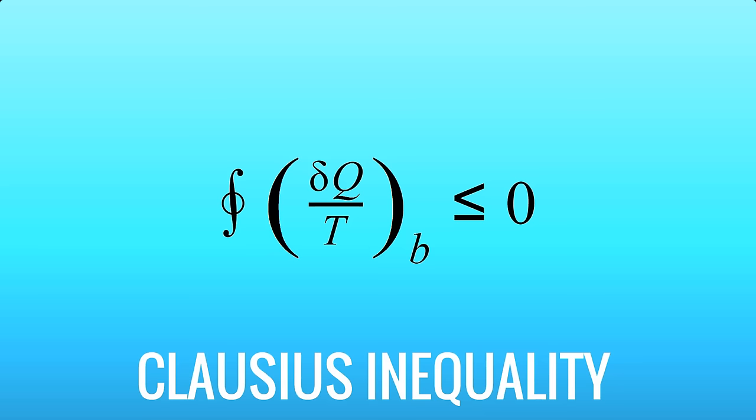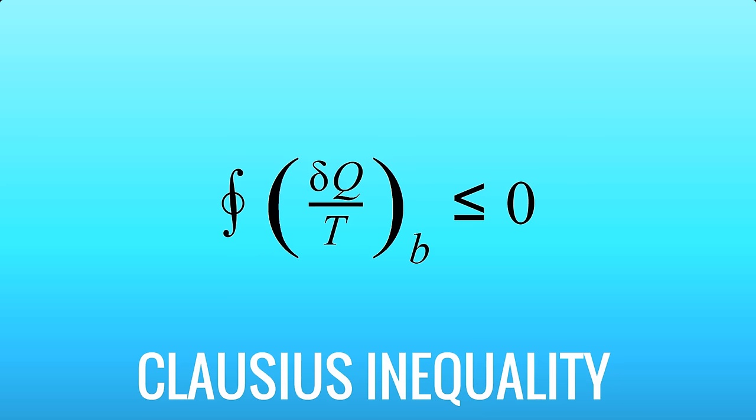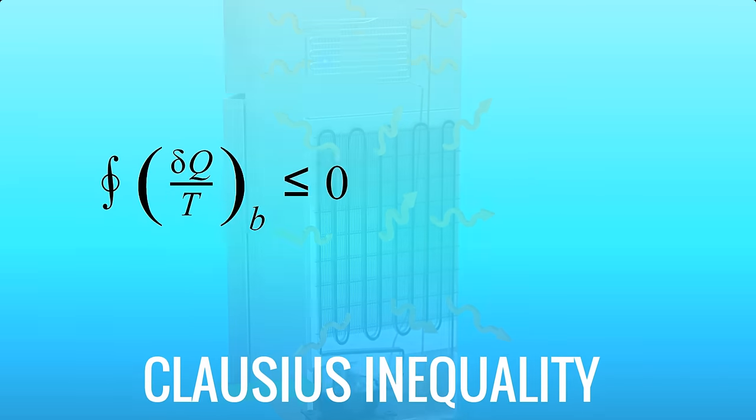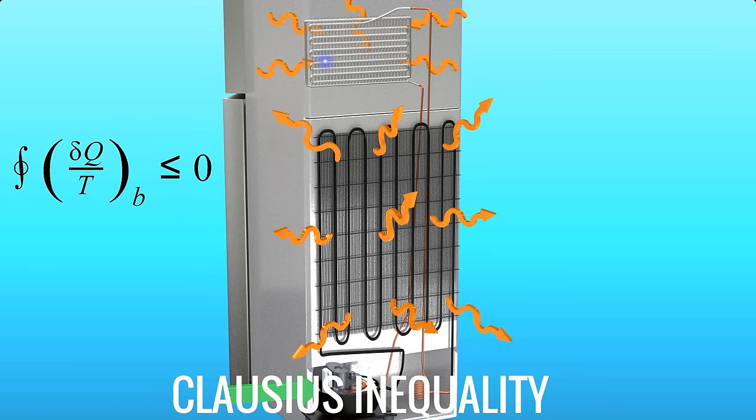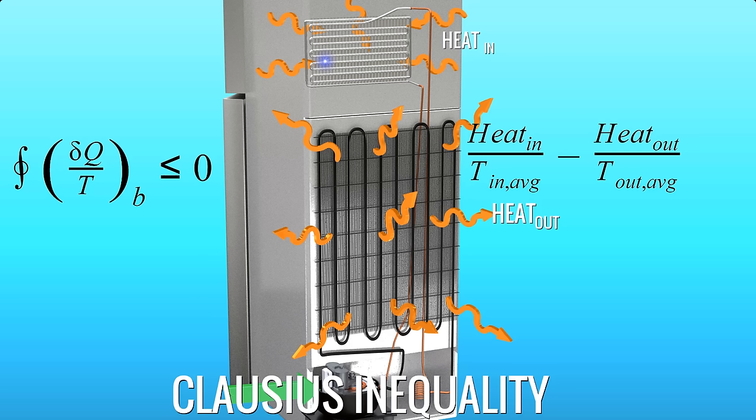The Clausius inequality means that, if you take a cyclic process, such as in a refrigerator, and add all the heat interaction happening at the boundary, divided by the temperature at the boundary, the resulting value will be less than or equal to zero. This is an interesting equality, which is true of all cyclic processes.